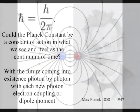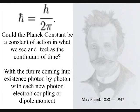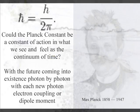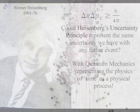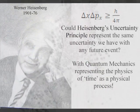At the smallest scale of this process, the Planck constant is a constant of action in the geometrical process we see and feel as the passage of time, with the uncertainty and probability of everyday life represented by Heisenberg's uncertainty principle.